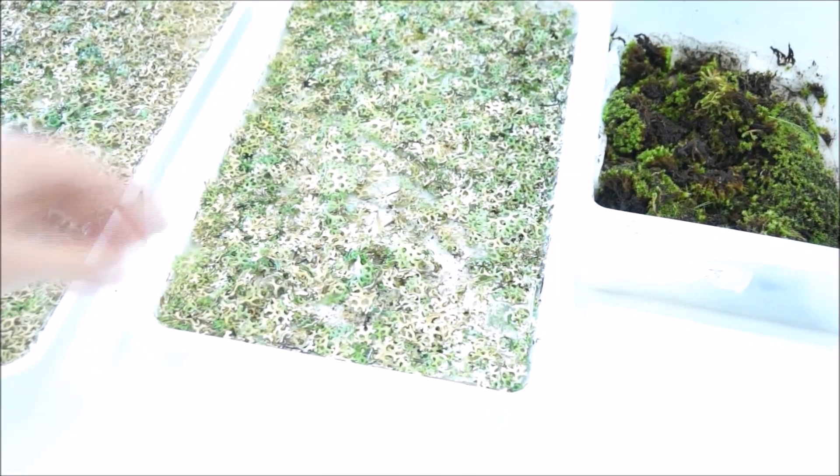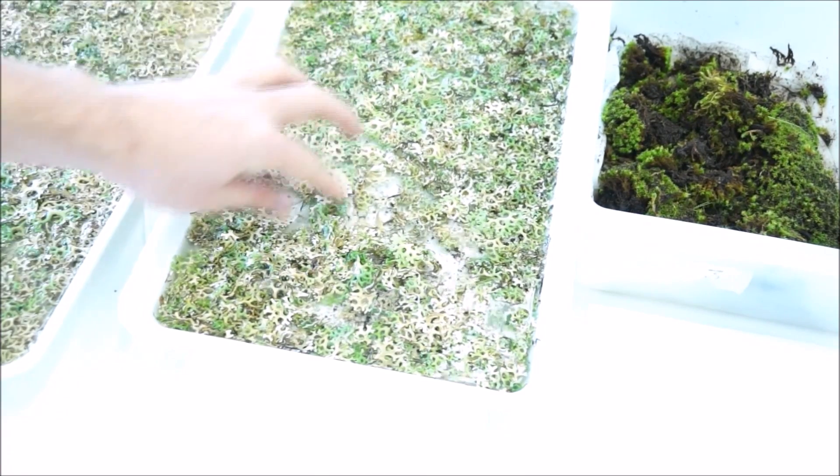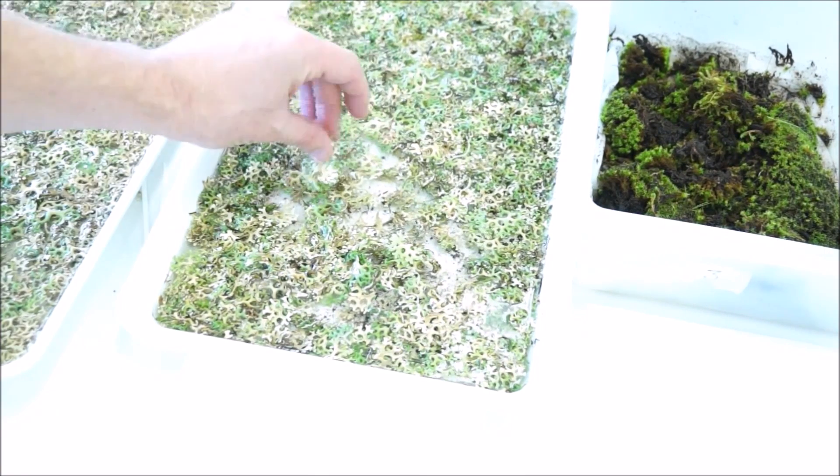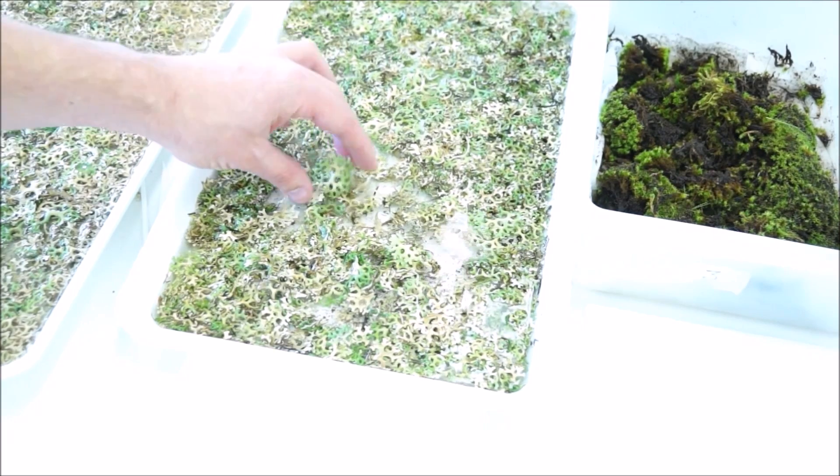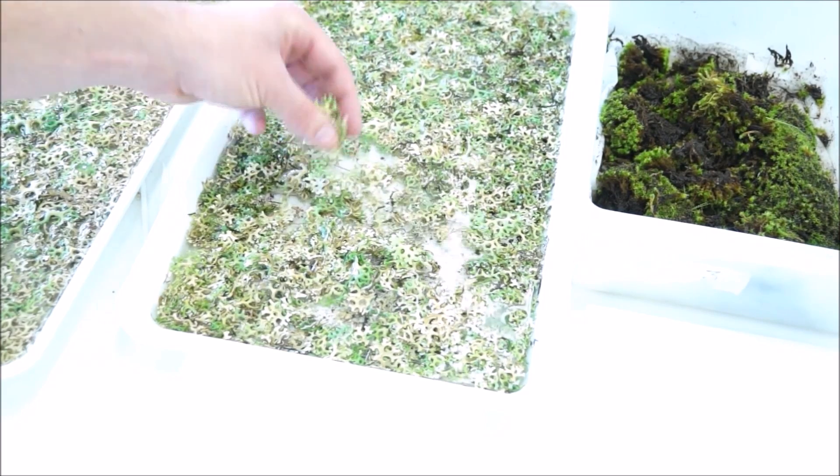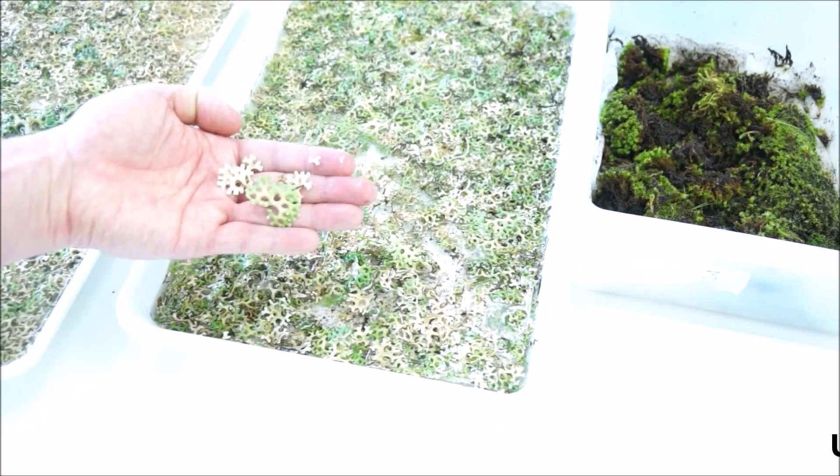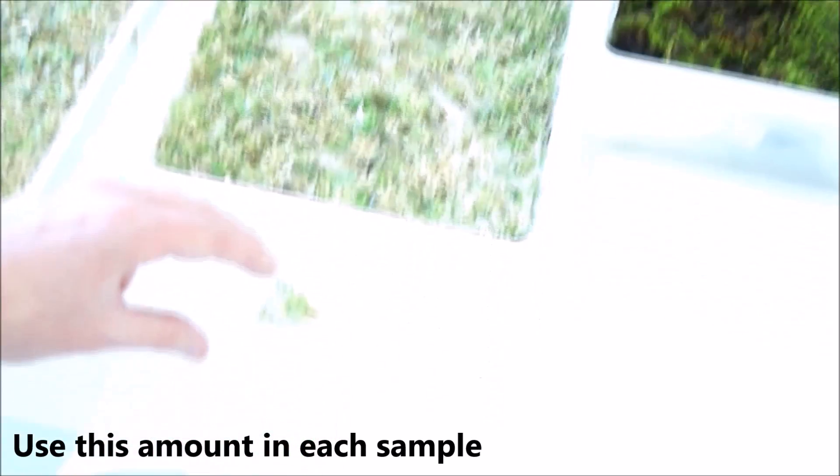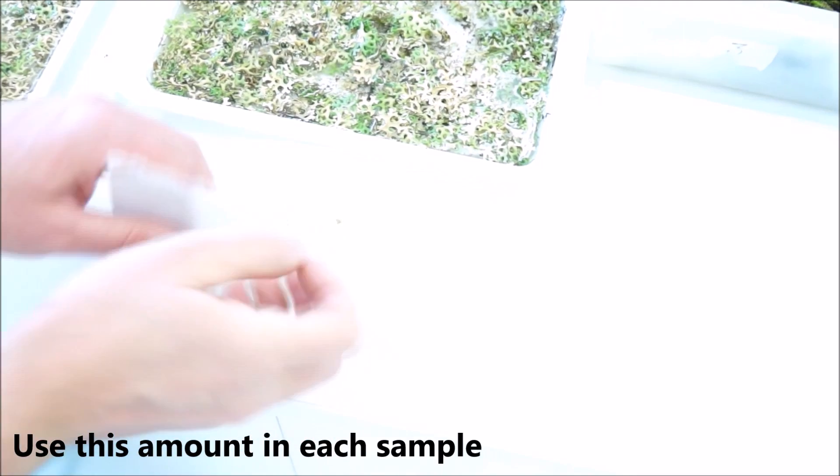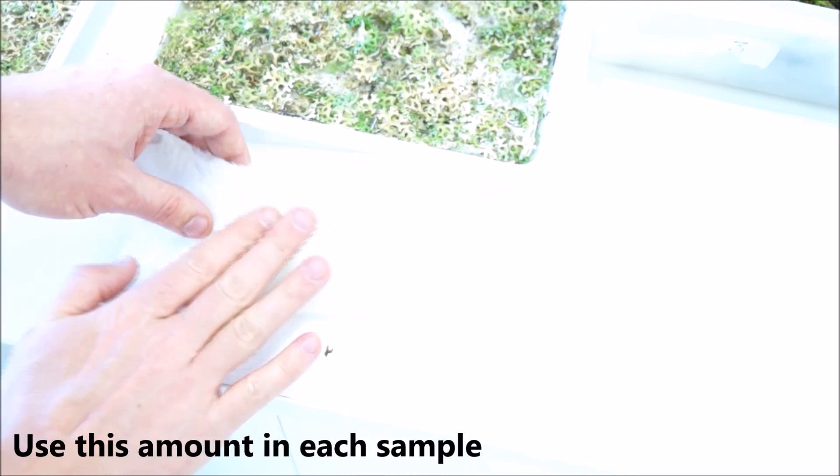The lichens are in water to maintain their turgidity, and so you want to be measuring water loss from the lichen, not from the surface. To get rid of any excess water, I'd grab a few per sample, drop them onto a piece of paper, and blot the outside dry. That'll be your sample.